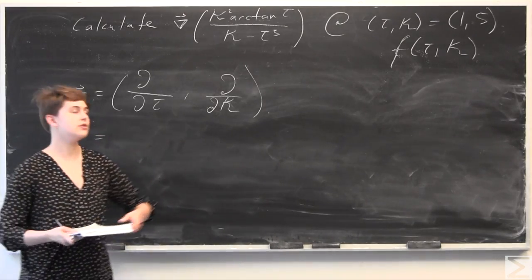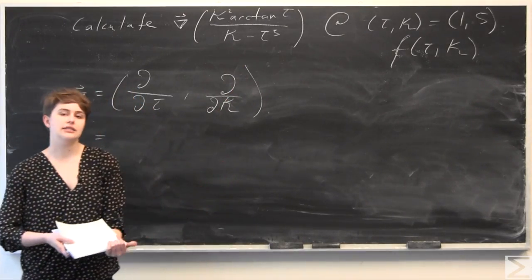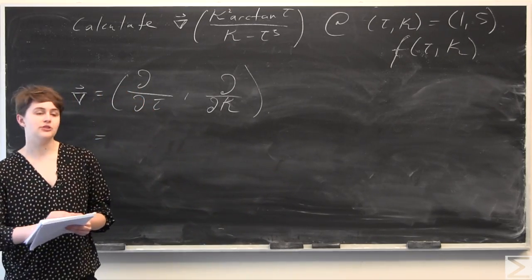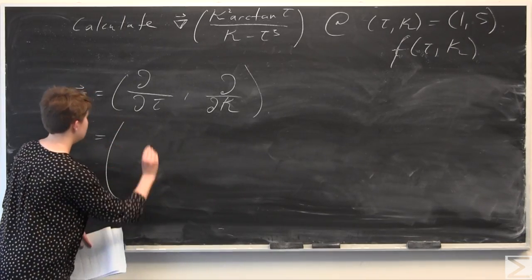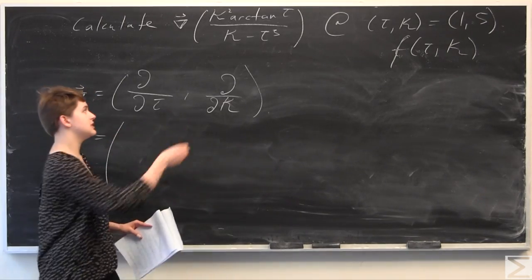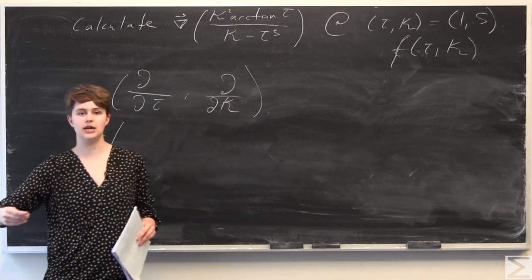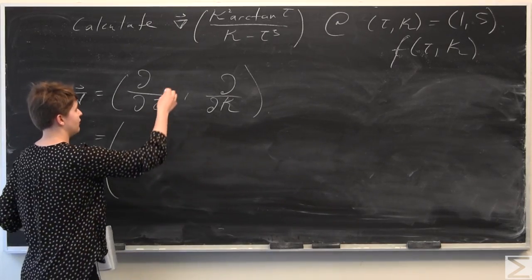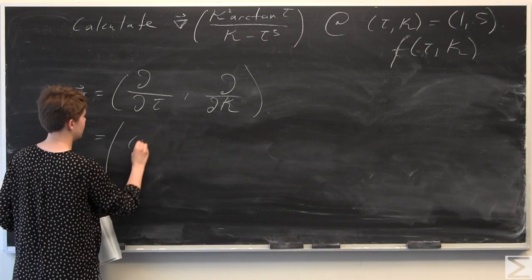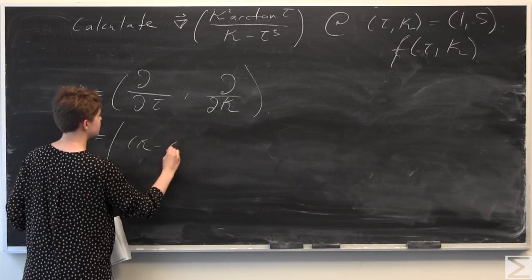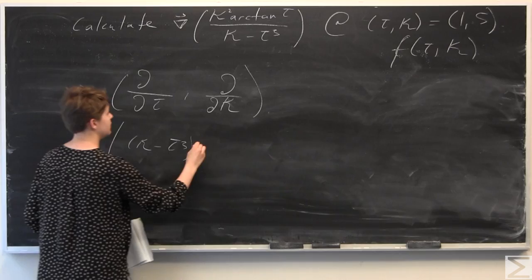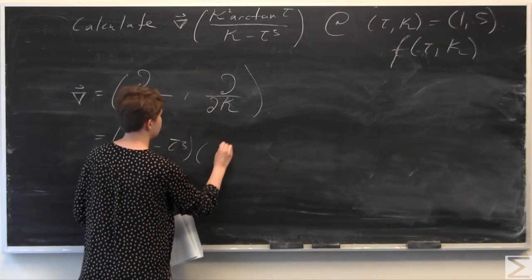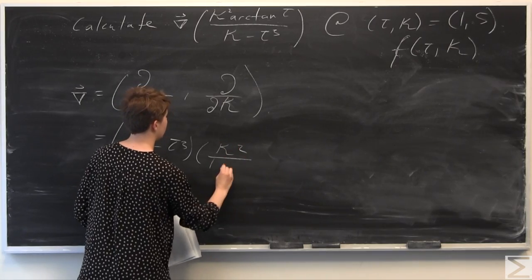We're going to evaluate the partial derivative of this function with respect to tau. We're going to use the quotient rule here because in the numerator we have something that depends on tau, and in the denominator we also have something that depends on tau. So we start with low — kappa minus tau cubed — times the derivative of the numerator with respect to tau, which is kappa squared over 1 plus tau squared.